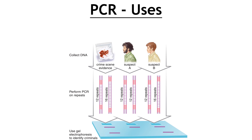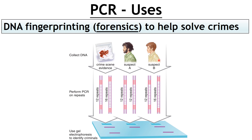Moving on to the uses of PCR — crime scenes are what sticks in everybody's mind. The first use is DNA fingerprinting or forensics, to help solve crimes. If you look at the picture, we've got some crime scene evidence — some blood — which is suspected to belong to the perpetrator. You take that away, amplify it, and there are various sequences of DNA which are unique to individuals. Here's the analysis: there's a match with suspect B. So you've got evidence of him being at the crime scene — that blood belongs to him. That's one use: DNA fingerprinting.